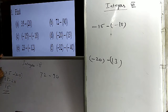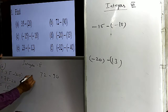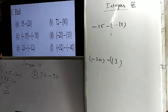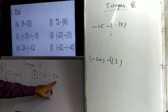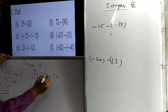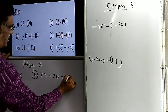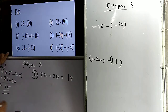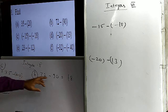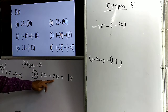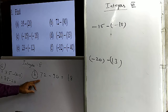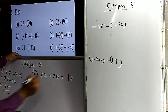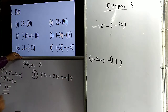The second problem is 72 minus 90. These two numbers have different signs, so we do subtraction: 90 minus 72 equals 18. In terms of magnitude, 90 is larger than 72, and 90 has a negative sign. So the answer is minus 18.